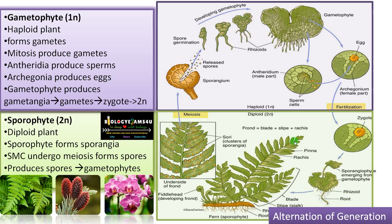In short: the sporophytic diploid plant undergoes meiosis forming haploid spores, which on germination form the haploid gametophyte. The gametophyte produces sex organs, forming male and female gametes by mitosis. These fuse to form the zygote, and the zygote germinates to form the sporophyte again. That is why this is called alternation of generation — one comes after the other: sporophyte forms gametophyte, and gametophyte forms sporophyte.